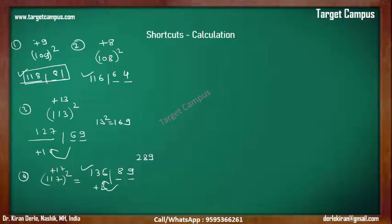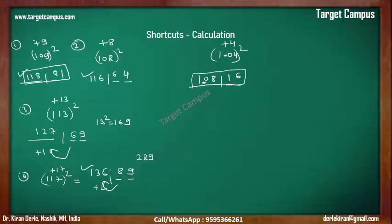If we have a question like 1.04 squared, don't get scared of the decimal. Forget the dot for some time — it's plus 4 from 100. The square of plus 4 is 16, and 104 plus 4 is 108. Since we were asked for 1.04 squared, we place the dot after 4 digits: the answer is 1.1016.